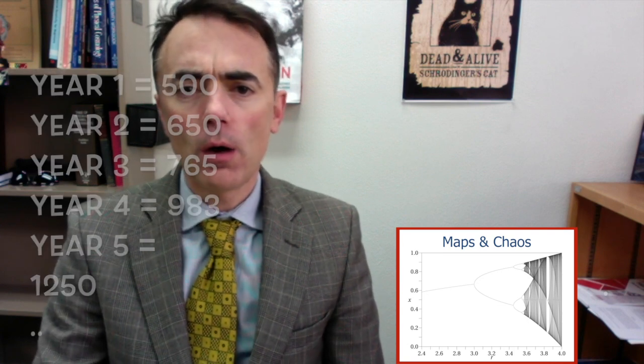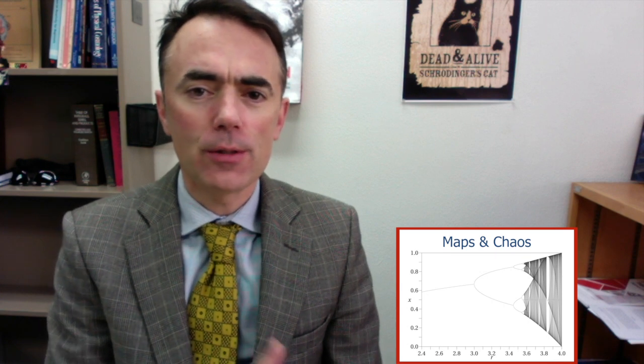You collect the number of individuals every year, so you have one single number per year. Those numbers jump from year to year in a discrete manner. This may signal a limitation in the study of the dynamical system, but we'll see how we can get a lot of insight from these maps.